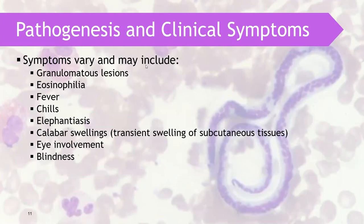The pathogenesis and clinical symptoms of filaria may vary among the parasites because of their habitat and the area they invade. Symptoms include granulomatous lesions, eosinophilia, fever, chills, and elephantiasis. For example, Loa loa can cause problems in the cutaneous tissue or in the ocular area, but is not capable of causing elephantiasis. Wuchereria bancrofti cannot cause eye involvement, but Loa loa and Onchocerca can. Blindness is possible if there is eye involvement.